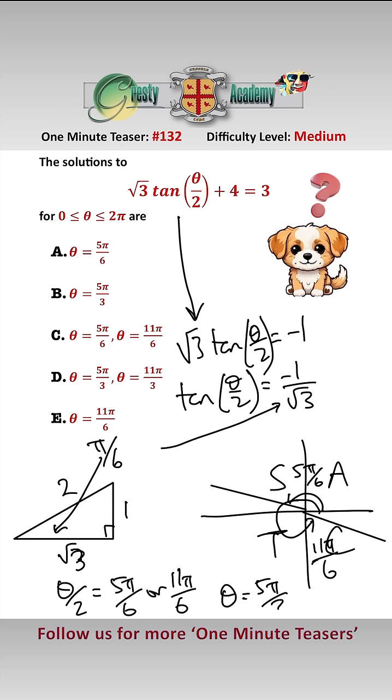But we're only interested in theta between 0 and 2 pi, and 2 pi is 6 pi over 3. So this one here is outside the range.